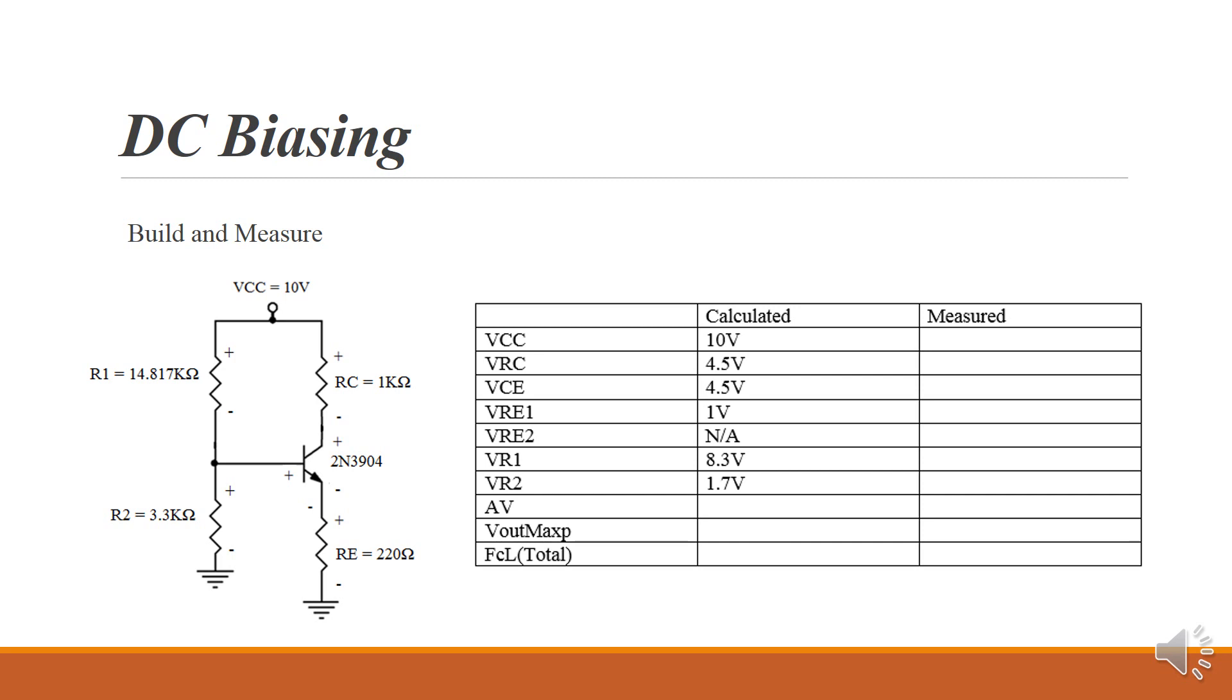This is a good spot to stop and build this DC bias circuit, just as it is on the screen here, and then go measure all these values and make sure that they're pretty close to the calculated values. If there's some kind of discrepancy, then we've got something wrong with either our calculations or the way that we've built the circuit. They should be pretty close to the calculated values.